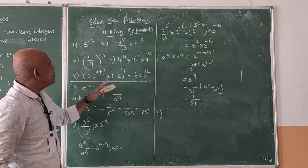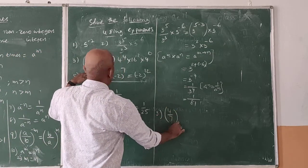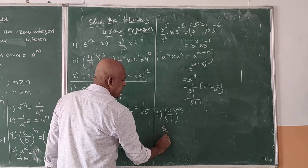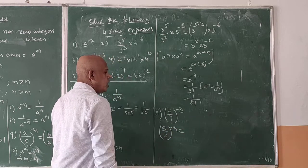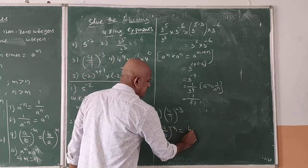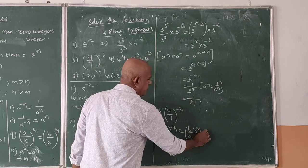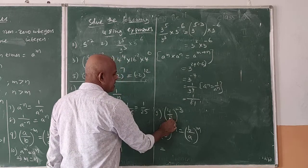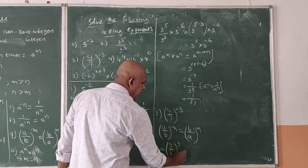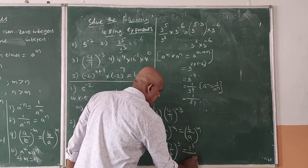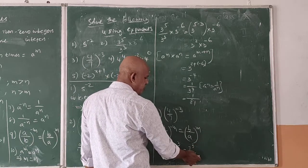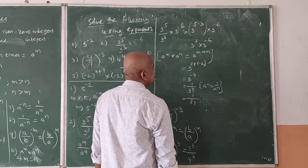Coming to the third problem: 4 by 7, whole to the power of minus 3. Here we apply the rule: a by b whole to the power of minus n is equal to b by a whole to the power of n — the reciprocal is taken and the negative power becomes positive. So 4 by 7 becomes 7 by 4, whole to the power of 3. That can be written as 7 to the power of 3 by 4 to the power of 3. You can leave it or find the values: 7 into 7 into 7, and 4 into 4 into 4.